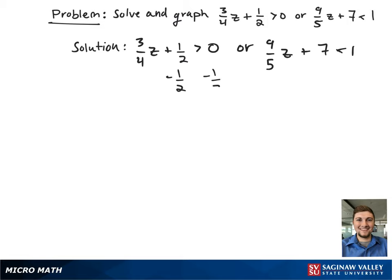After rewriting the inequality, we're going to start with the left hand side, subtracting 1/2 from both sides. This gives 3/4 z is greater than negative 1/2.